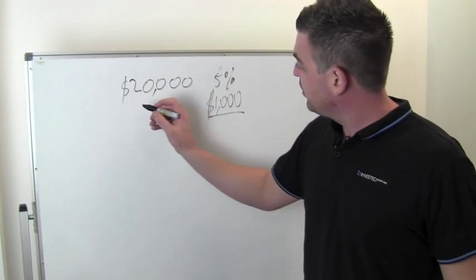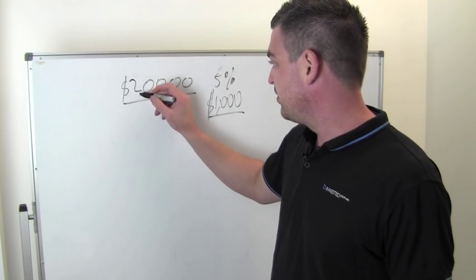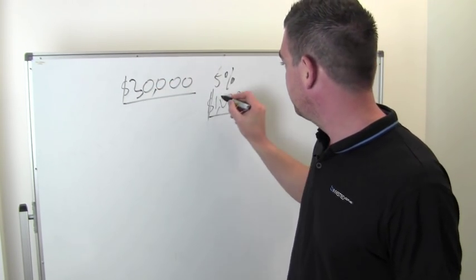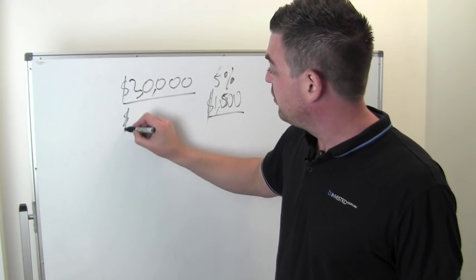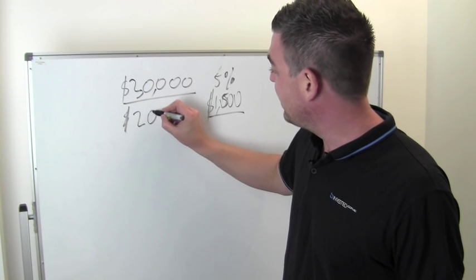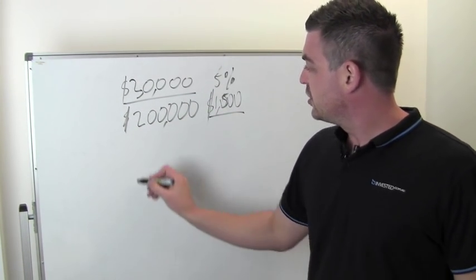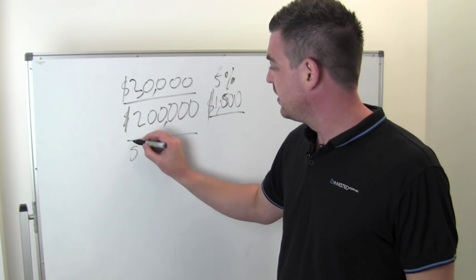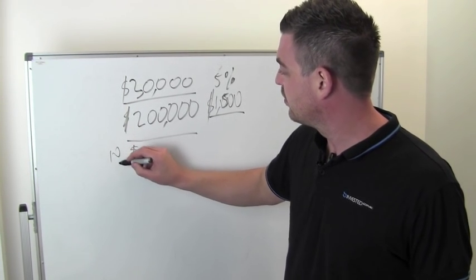If you use that as a deposit for another property, I'm just going to make up a scenario here. Pretend it's $30,000 and that's $1,500, same sort of numbers. Let's say for instance you go and purchase a property for $200,000, which in the next year goes up by 10%, whatever...